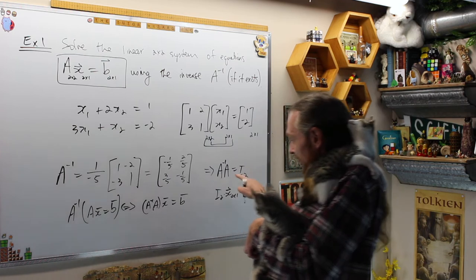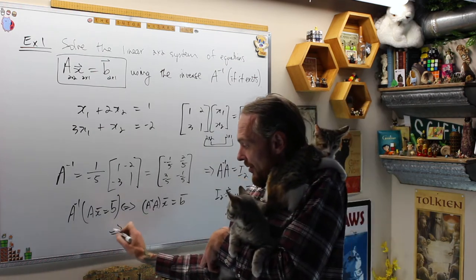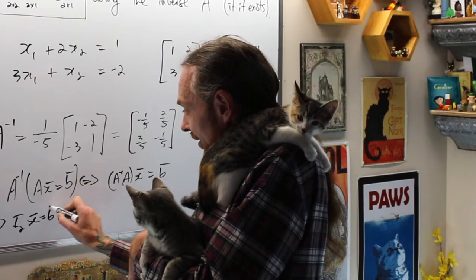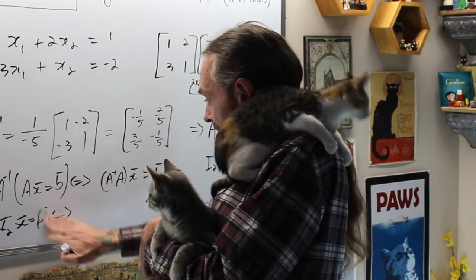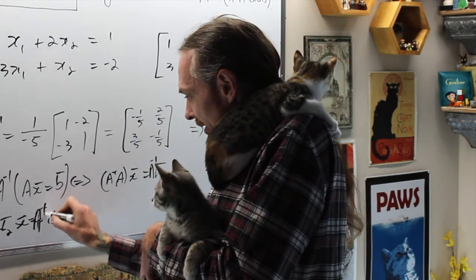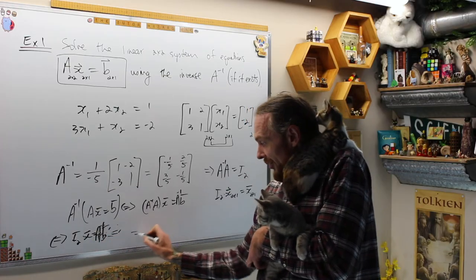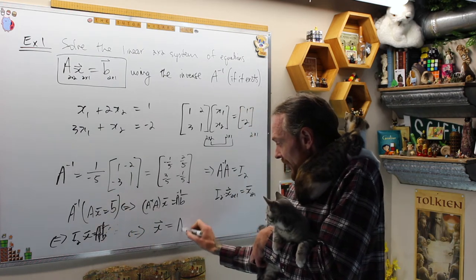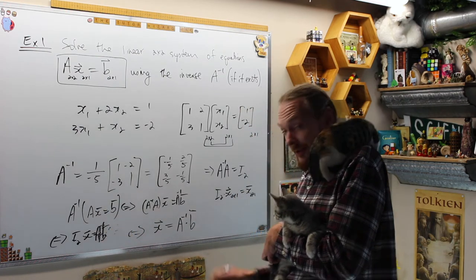That's going to give me A inverse A times x equals A inverse b. This is identity. This is I2 times x equals A inverse b. Now, what am I gonna do? In my last step, I'm going to solve for x and the unique solution will be A inverse b matrix multiplication.